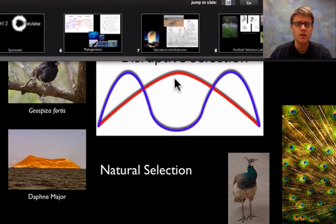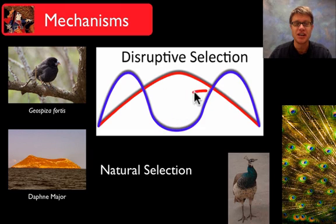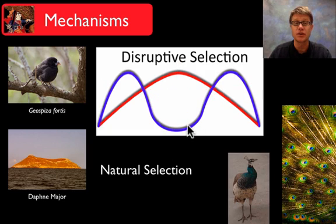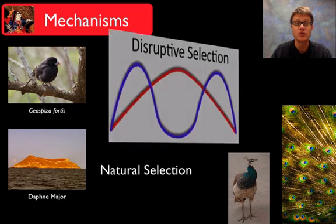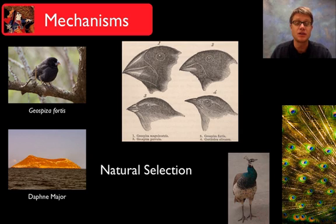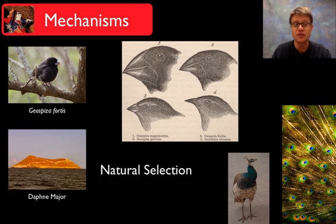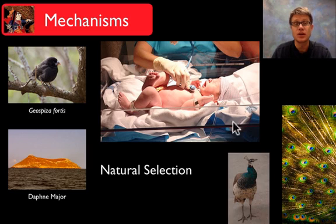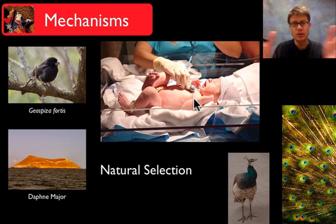Disruptive selection is when pressure pushes populations apart, removing individuals in the middle. An example is found in the Galapagos finches — so many different beak types exist because each bird is modified to feed on a specific seed, and as the first finches spread to different islands they adapted to specific climates. Stabilizing selection is when we squeeze the bell-shaped curve together. The example I always give is babies — a one-pound baby can't survive, and a 21-pound baby wouldn't survive either. Babies weigh about 7 pounds because there's pressure on either side eliminating babies at the extremes.